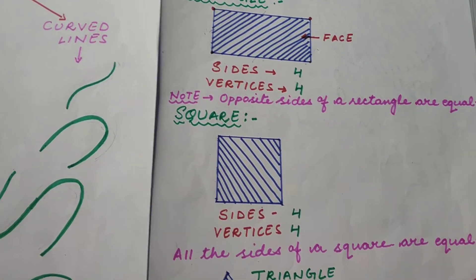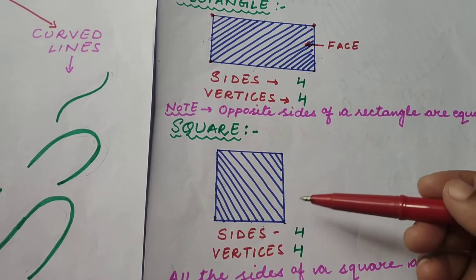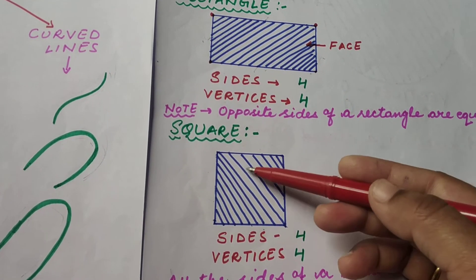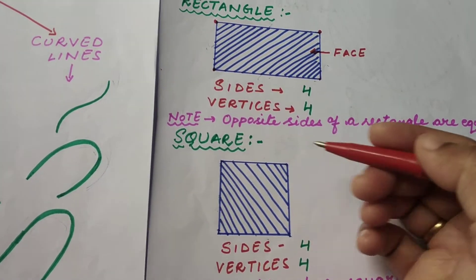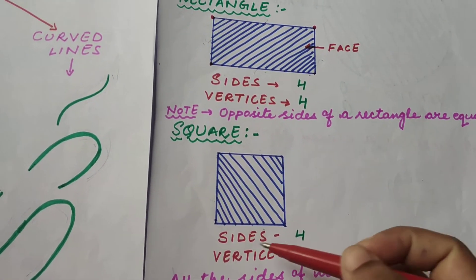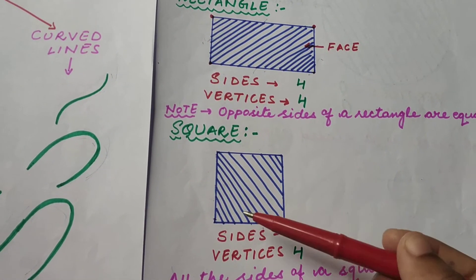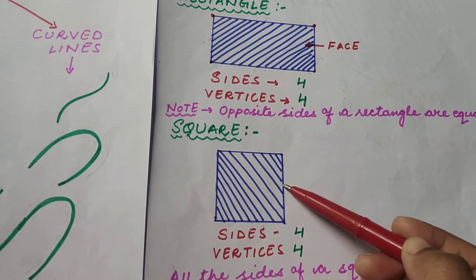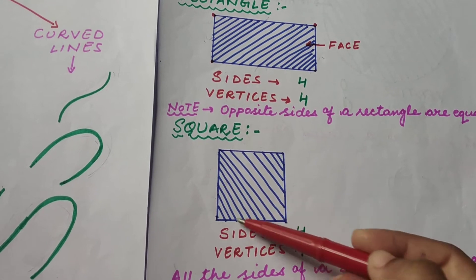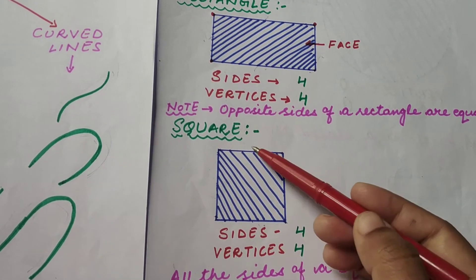The next figure is a square. All the sides of a square are equal. How many sides are there? One, two, three, and four.